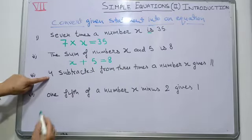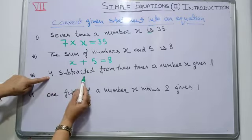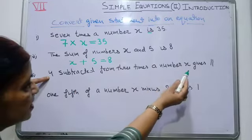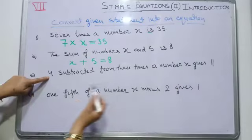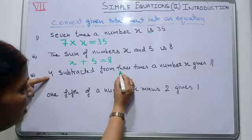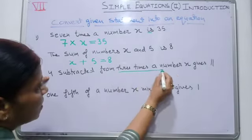Come to the next example. 4 subtracted from 3 times a number x gives 11. Here we first write the number after the word 'from'.